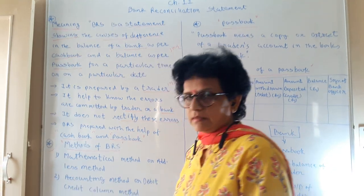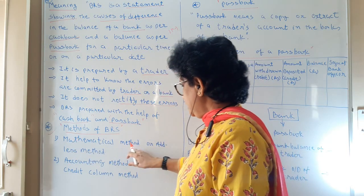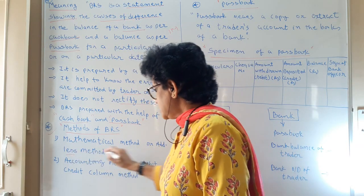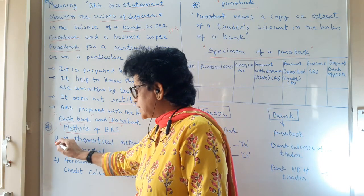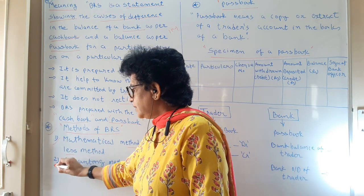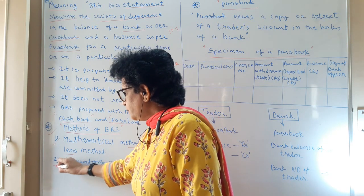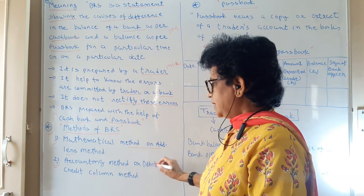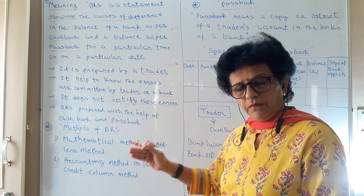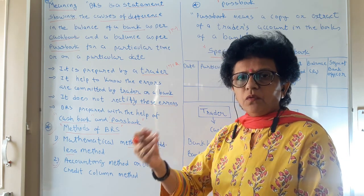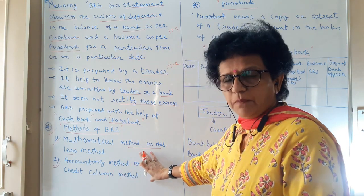The next point is the method of BRS. There are two ways to prepare BRS. Number one is the mathematical method — the add and less method — where you add and subtract mathematically. But most examples we will not do with this method since we follow the double entry accounting system with debit and credit. So we are going to follow the second method, that is the accounting method, or the debit and credit column method. We will follow every BRS preparation and presentation with our accounting approach of debit and credit, and later we will do examples based on this.